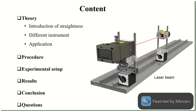In the present slide, I have shown the content of the presentation. First, we will see the introduction in which I will explain the definition of straightness. Then, different instruments through which we can measure the straightness and what is the need for the straightness measurement. Then, we will see the experimental procedure followed by the experimental setup, result and conclusion. At last, I will give two questions as an assignment and during this presentation, I will also try to answer those questions.